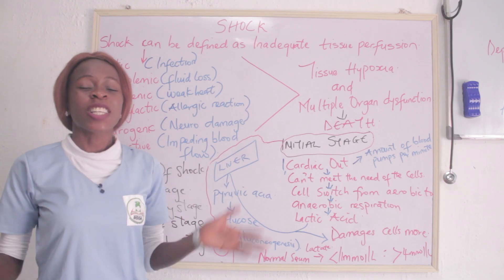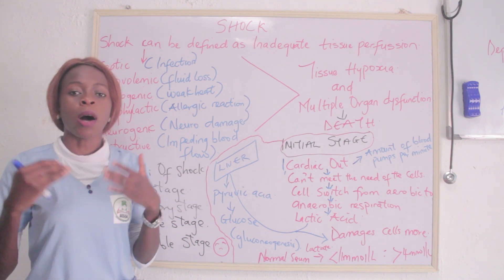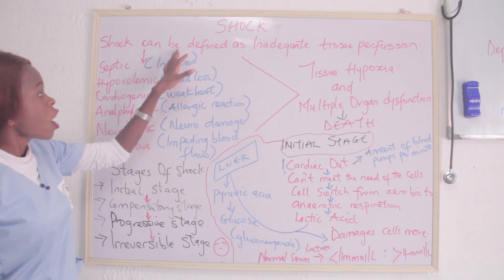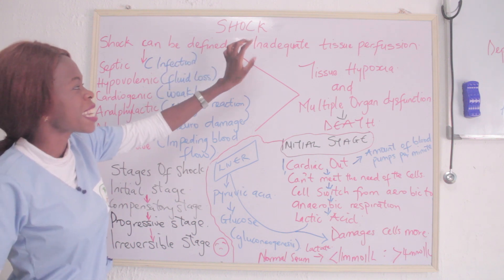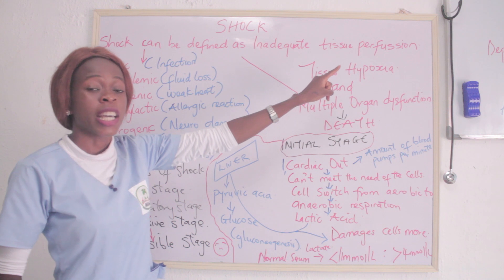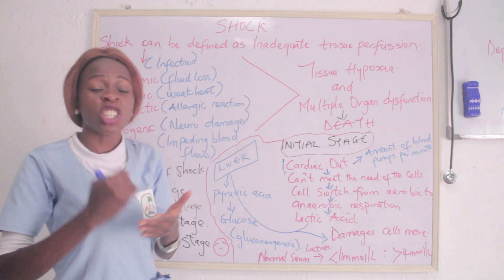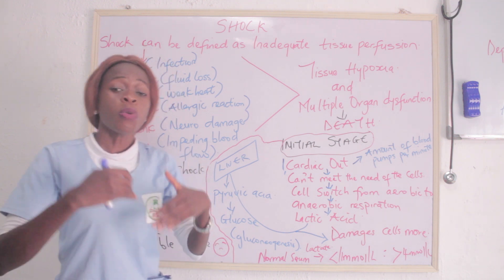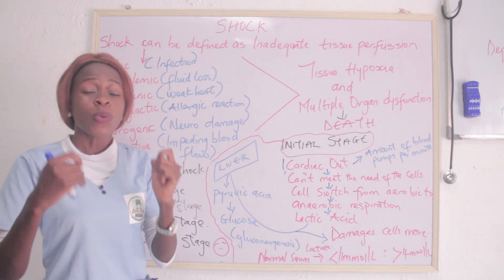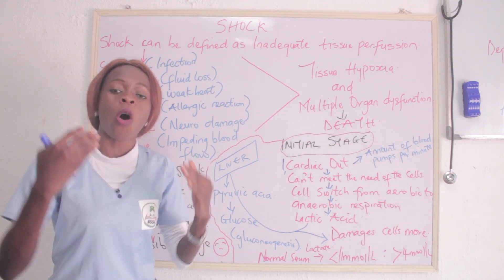Welcome back. Today we are going to be talking about shock. Shock can be defined as inadequate tissue perfusion. In simple terms, shock means the body tissues are not getting enough oxygen.